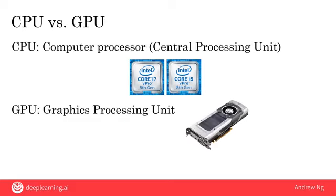GPU stands for graphics processing unit. Historically, the GPU was made to process pictures — so if you play a video game, it's probably a GPU that is drawing the fancy graphics. But what we found several years ago was that the hardware originally built for processing graphics turns out to be very, very powerful for building very large neural networks, or very large deep learning algorithms. Given the need to build very large deep learning or neural network systems, the AI community has had this insatiable hunger for more and more computational power to train bigger and bigger neural networks. And GPUs have proved to be a fantastic fit for this type of computation, which is why GPUs are playing a big role in the rise of deep learning.